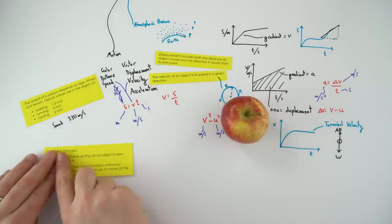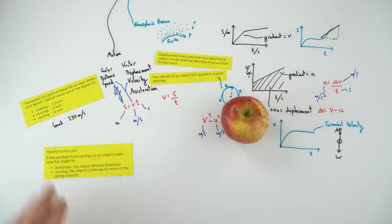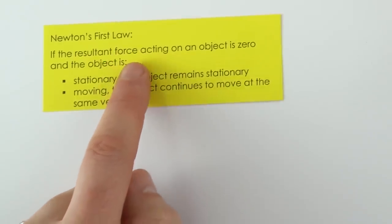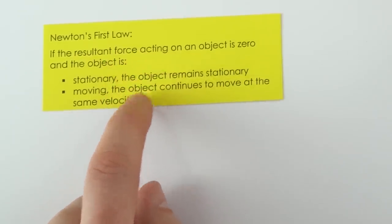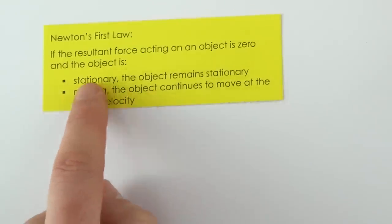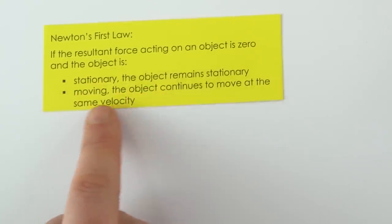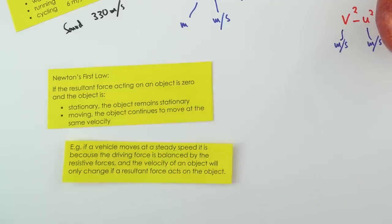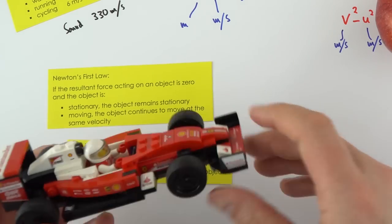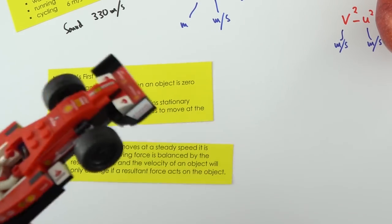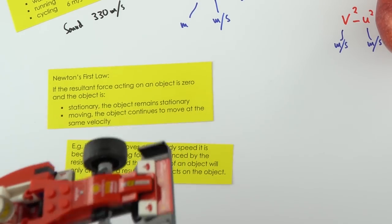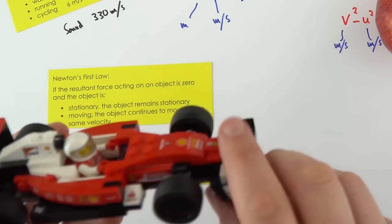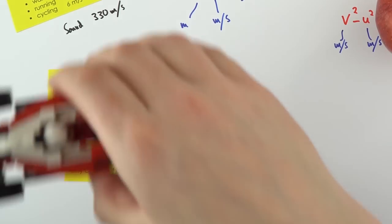There are three Newton's laws to remember. Newton's first law states that if the resultant force on an object is zero, stationary objects remain stationary and moving objects continue to move at the same velocity. For example, a racing car at maximum speed on a straight road reaches a point where air resistance equals the engine thrust, so it doesn't get any faster.